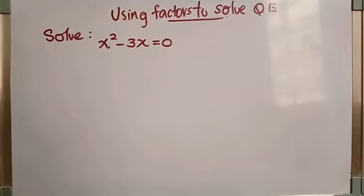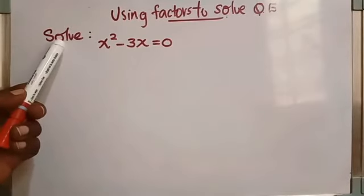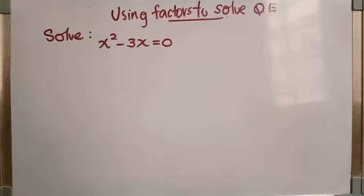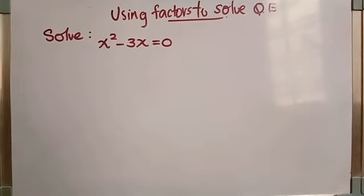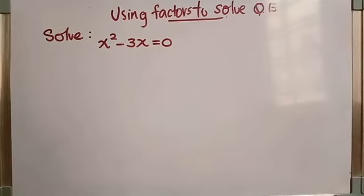We have to solve x squared minus 3x is equal to zero. Look at the commanding word — it is 'solve.' What do you mean by solve? Find the solution, or root. All this gives the same meaning: to find the value of the unknown variable.